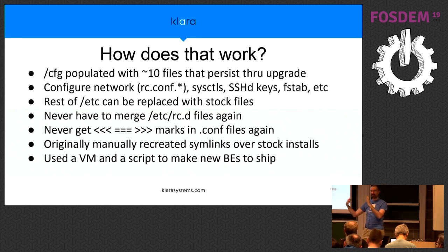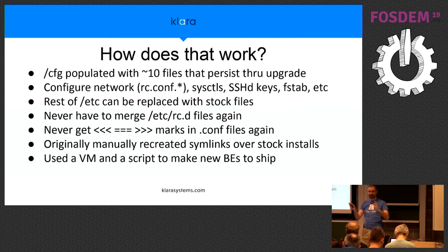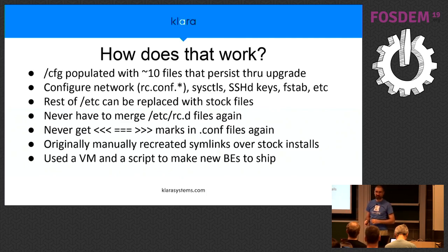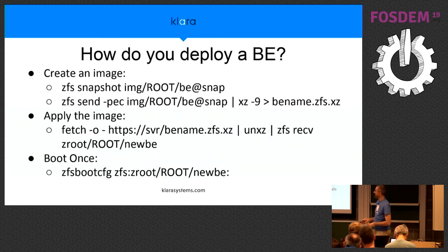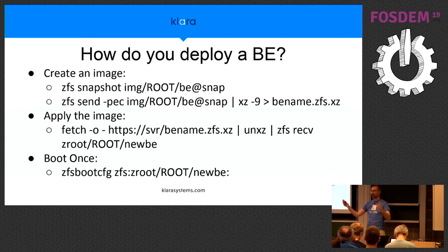The way we used to create images was spin up a VM, install FreeBSD, then delete the SSH keys and try to clean up. But that never worked out very well. Now that we have created this boot environment, how can we deploy it to many servers? On the virtual machine where we've created the newer FreeBSD image, we just take a snapshot of the boot environment and use ZFS send to pipe it into a file, compressed to make it smaller.